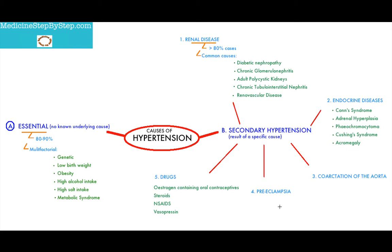Then there is preeclampsia. Preeclampsia in the final trimester can cause hypertension. The last cause of secondary hypertension are drugs, such as estrogen, oral contraceptives, steroids, NSAIDs, and vasopressin.